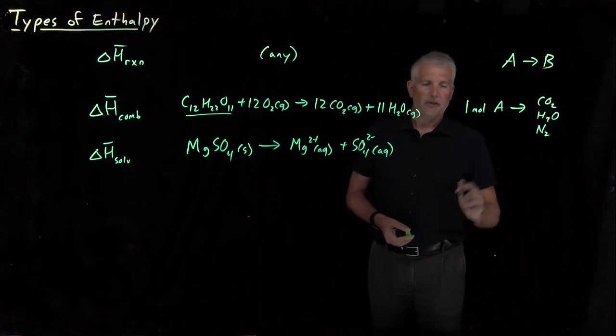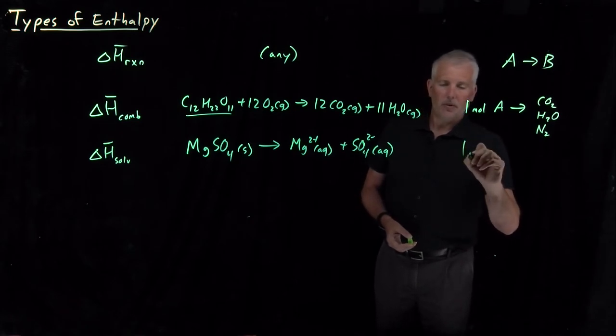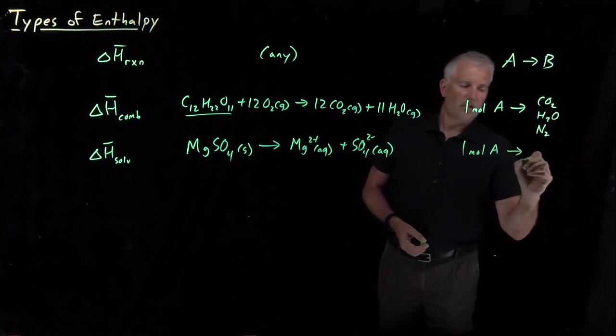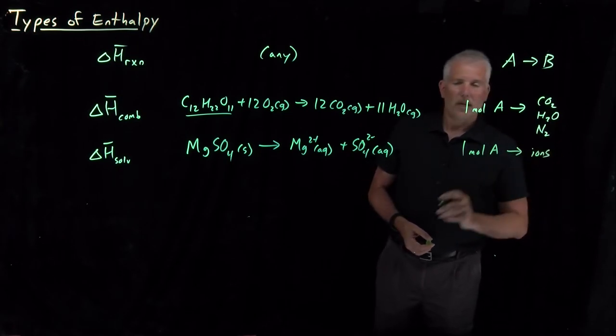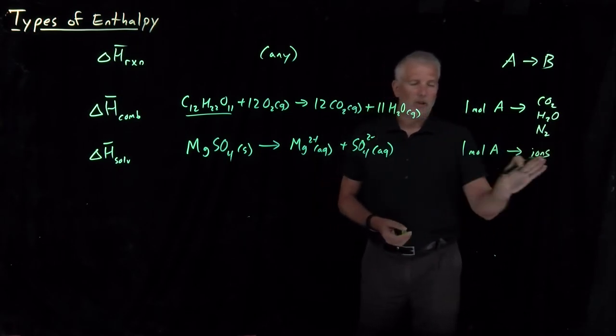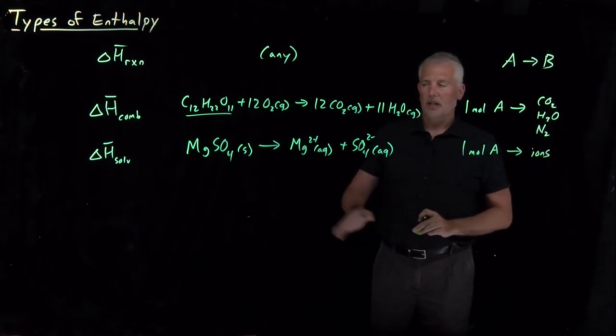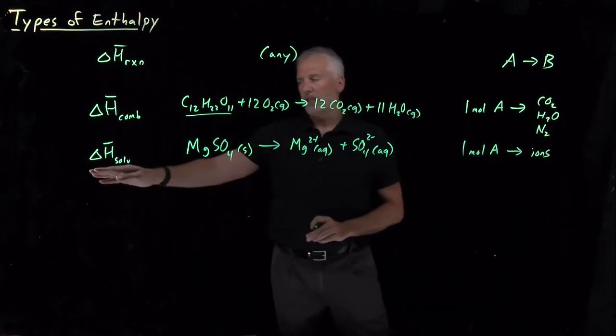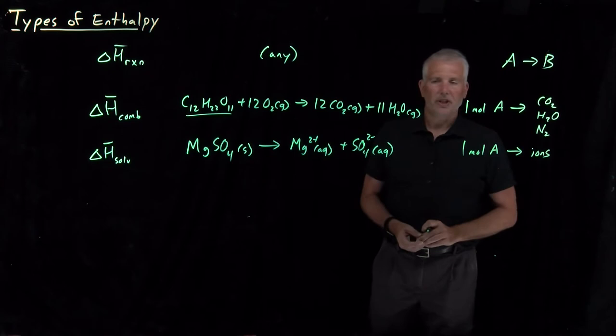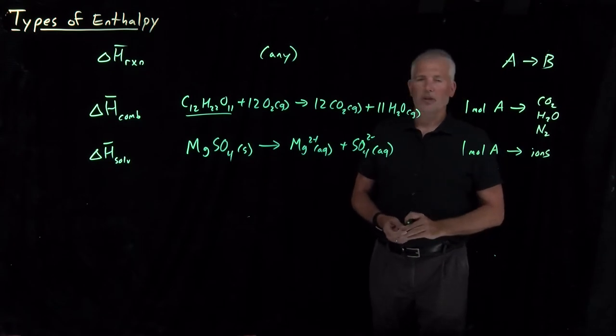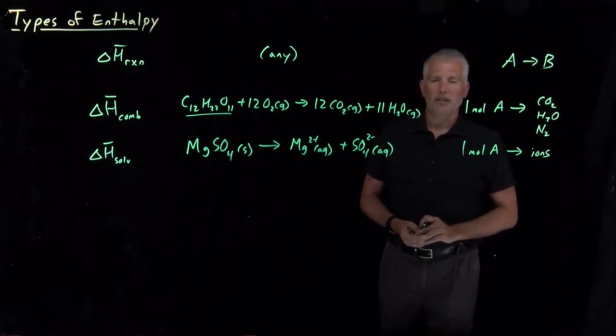If we have one mole of a substance, an electrolyte that dissolves into ions in aqueous solution, then we would call that process a solvation reaction and we would label its enthalpy change an enthalpy of solvation. There's a few other very common types of reactions that we can consider.